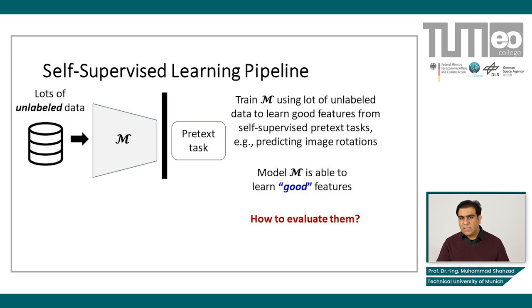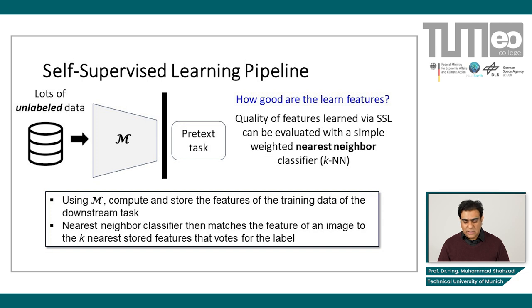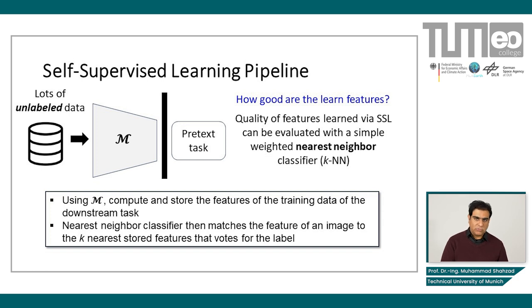So once we have this, how could we evaluate such features? Let's say we have some features or a representation which is good enough — how could we evaluate? One particular approach is to assess the quality of features using k-nearest neighbors. This is one standard way of doing this. Using M, we compute and store the features of the training data for the downstream task.